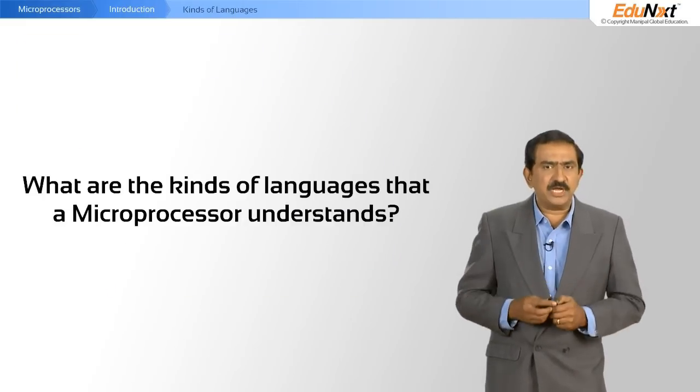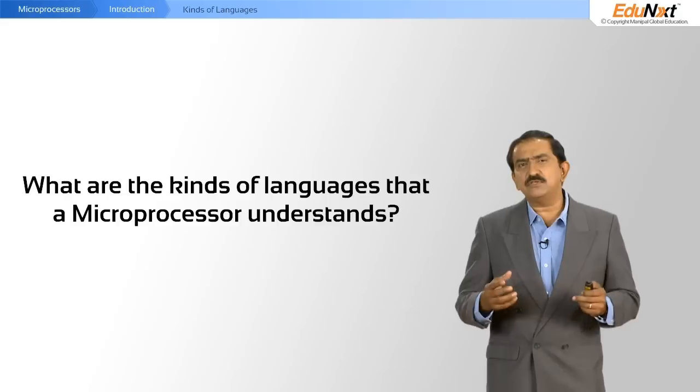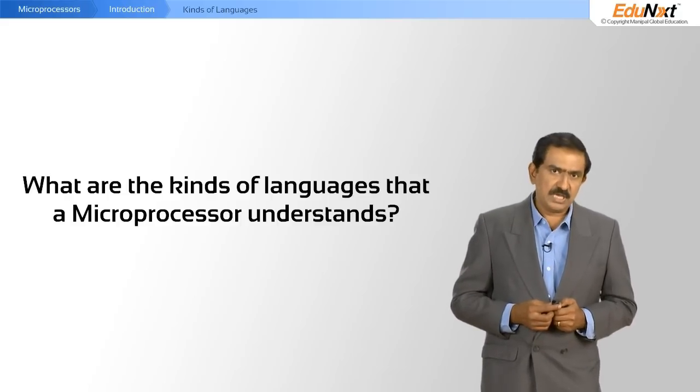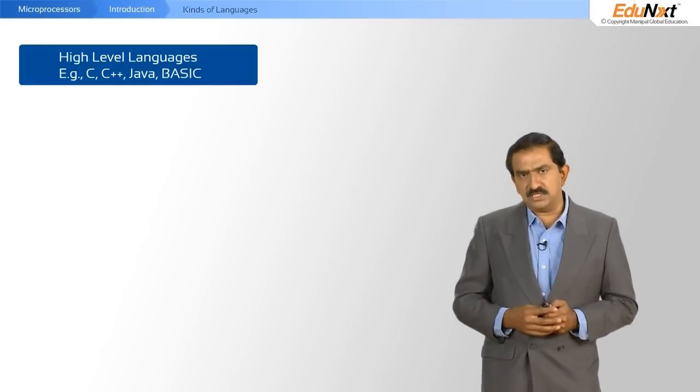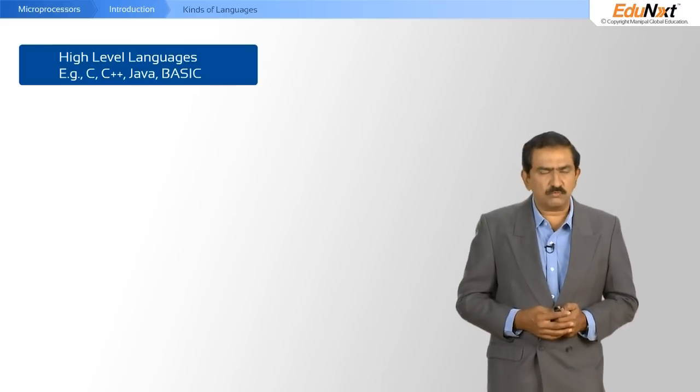The last piece that I would like to end today with is on the kinds of languages that a processor can understand. Really, at the top, you have what are called high-level languages. And these are C, C++, Java, and so forth.